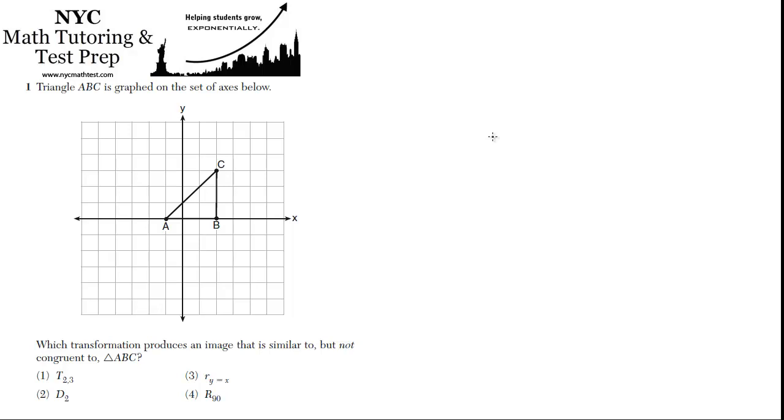In the first problem, they're asking, triangle ABC is graphed on the set of axes below. Which transformation produces an image that is similar to, but not congruent to, triangle ABC?